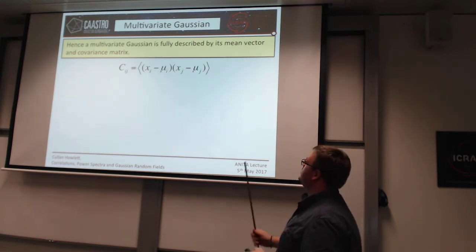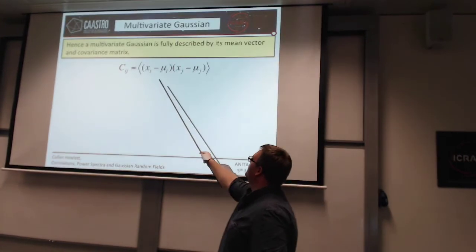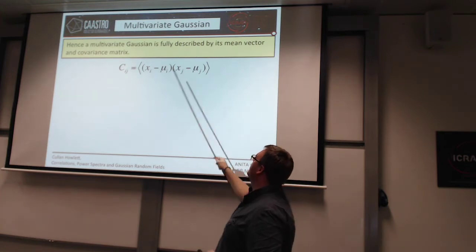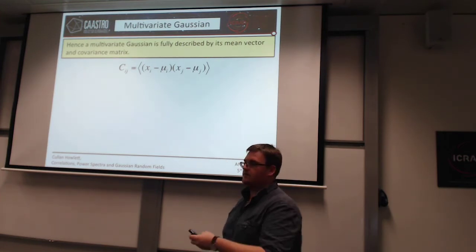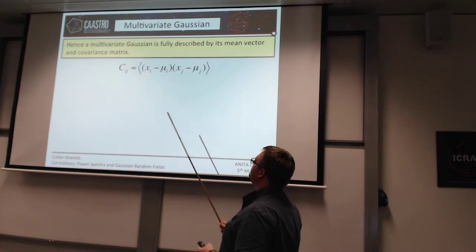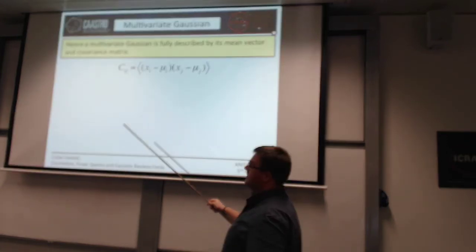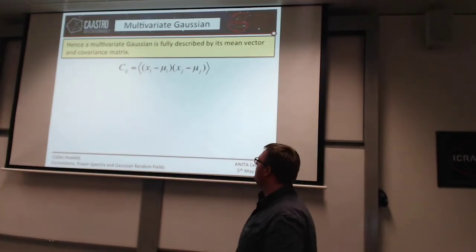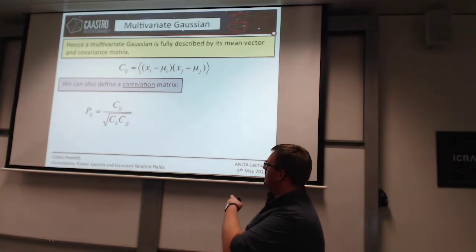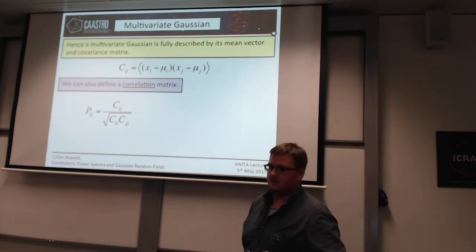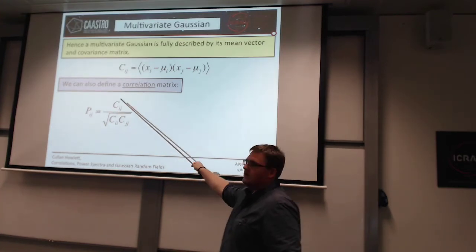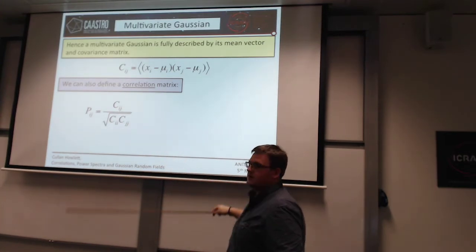This is the definition of covariance: you have the variable at i minus its expectation, times the variable at j minus its expectation. If you propagate this to a single case, you end up with x_i minus mu_i squared, which is just the variance. From that we can define a correlation matrix — which is where we're heading when we move on to correlation functions and power spectra — defined simply as the covariance matrix divided by the square root of the diagonal elements.